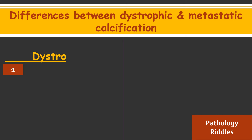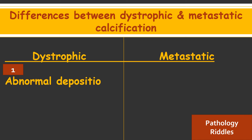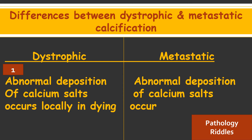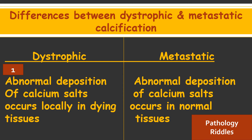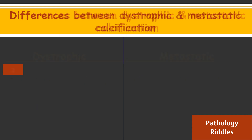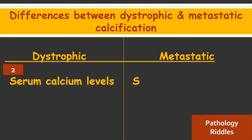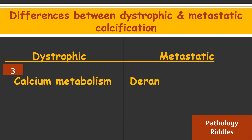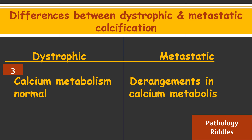Let's see the differences between dystrophic and metastatic calcification. Dystrophic calcification is the abnormal deposition of calcium salts that occurs locally in dying tissues, while metastatic calcification occurs in normal tissues. The second difference is that serum calcium levels are normal in dystrophic calcification, while in metastatic calcification the serum calcium levels are increased. The third difference is that calcium metabolism is normal in dystrophic calcification, while in metastatic calcification there are derangements in calcium metabolism.